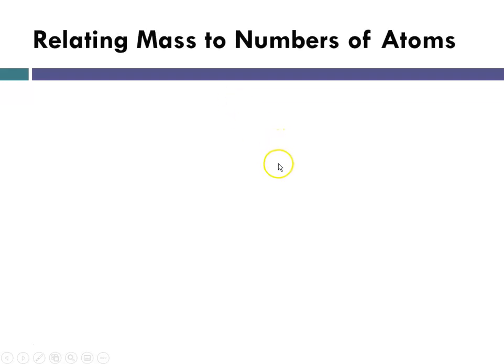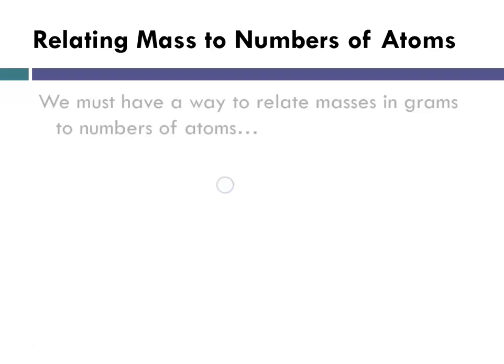So we have to have a way to relate mass to number of atoms. The reason is, in order to do anything in chemistry, you're going to be able to measure things. And how do you know that you're measuring the right amount? So we must have a way that relates mass and grams to the number of atoms.